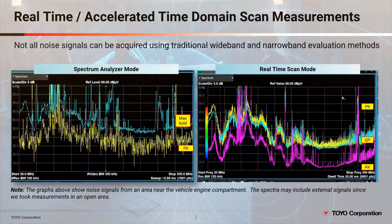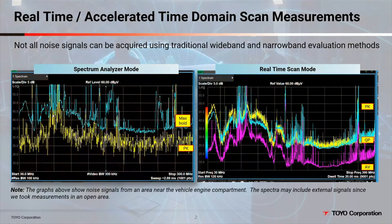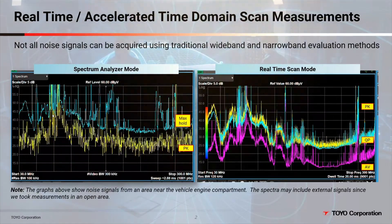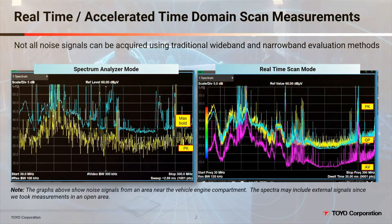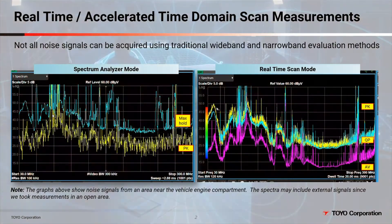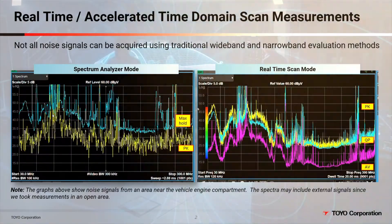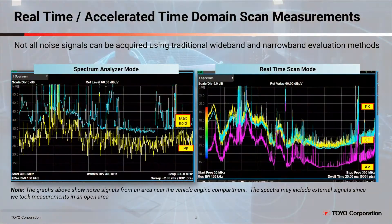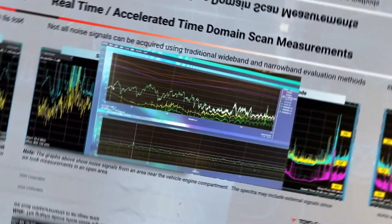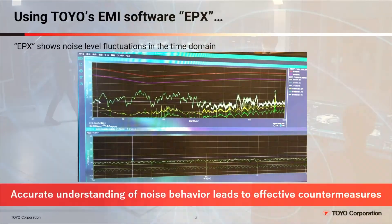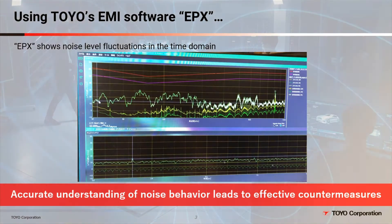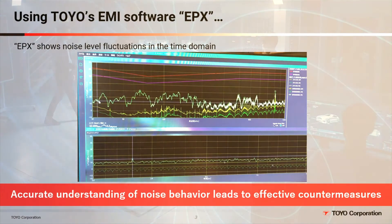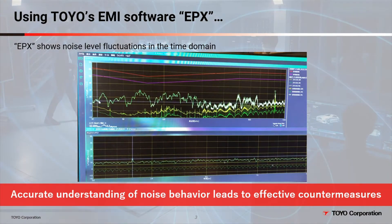Over time, vehicle electronics will continue to be more complex, and it will be more important than ever to be able to identify noise regardless of whether it is of the wideband or narrowband type. Toyo Corporation's emission measurement and analysis software, EPX-VE, fully utilizes the accelerated time domain scan. With the software you can check the noise level fluctuations in the time domain immediately after taking measurements.